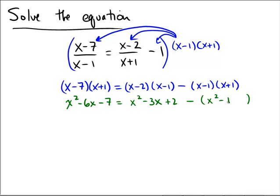Okay, let's distribute one more time over here, so that way everything's nice and simple, and we don't make any mistakes with negative signs. x squared minus 6x minus 7 equals x squared minus 3x plus 2 minus x squared plus 1.